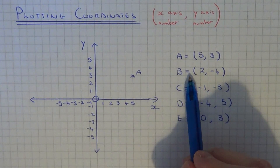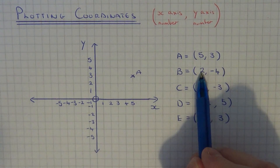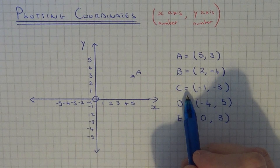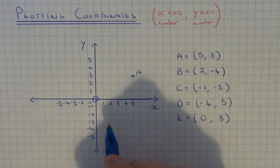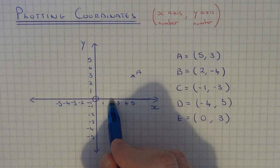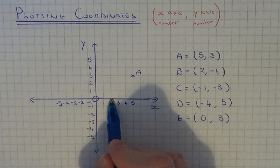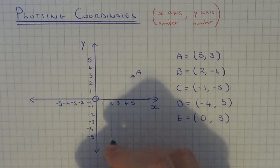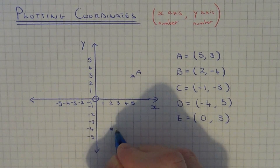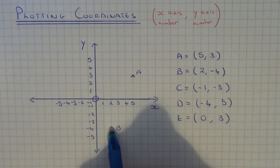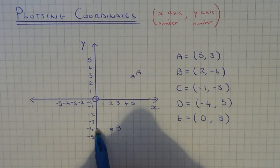Let's do the next coordinate. So coordinate B is at — so again let's go to the x-axis number first which is two. So x equals two is here. Now the y-axis number is minus four, so this means we need to go four squares down — one, two, three, four — and put a cross here. Again you can check it because we have two on the x-axis and minus four on the y-axis.